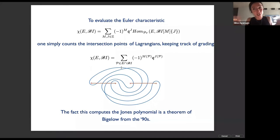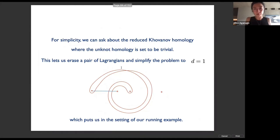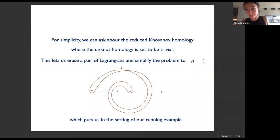The fact that you are trying to describe the theory that really wants to live upstairs — which would be more symmetric — from the downstairs perspective, the downstairs perspective is much more economical. The algebras that describe the downstairs theory are much smaller. For example, to compute the homology for the trefoil, you'd have the following brane configuration. For simplicity, let's ask about reduced Khovanov homology, whose Euler characteristic is the Jones polynomial.